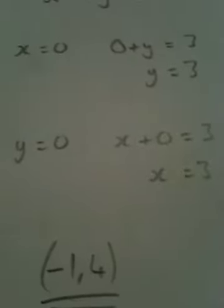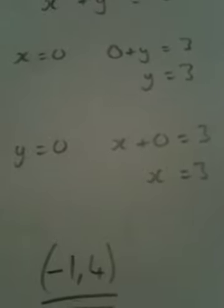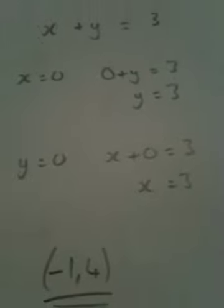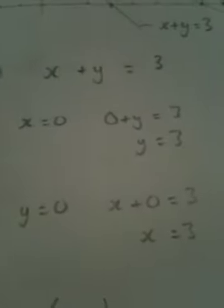I'm also going to pick when y equals 0. In other words, we're at a height of 0 or on the x axis. In this case, x plus 0 will equal 3. In which case, x is 3 because 3 plus 0 is 3. So 3 comma 0 is also a coordinate.